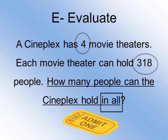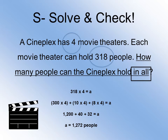E for evaluate means we need to figure out what steps we need to do to solve this problem. We know that if there are four movie theaters and 318 people in each, we can multiply these numbers in order to get the total. Or we can use repeated addition and do 318 three more times. So we're going to solve this problem. Using the CUBES strategy, we knew we had to use multiplication: 318 times 4. I use the distributive property — 300 times 4, plus 10 times 4, plus 8 times 4 — and all together we have 1,272 people who can fit inside all these theaters.